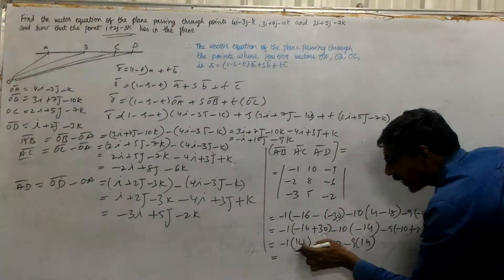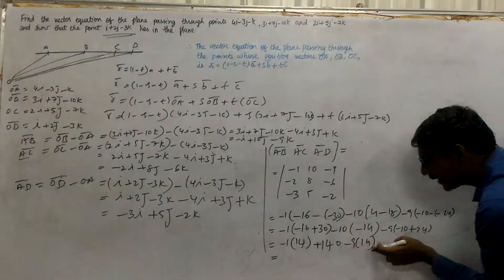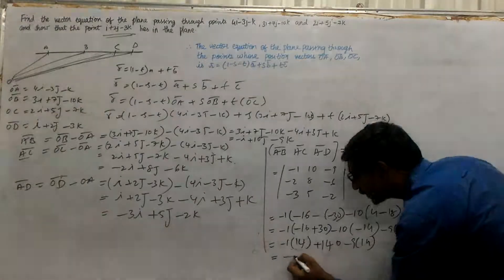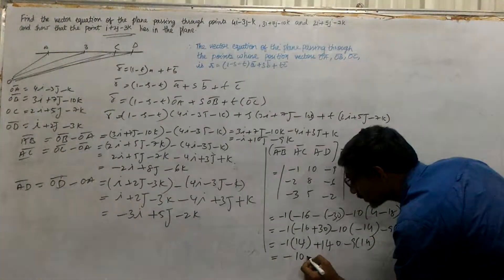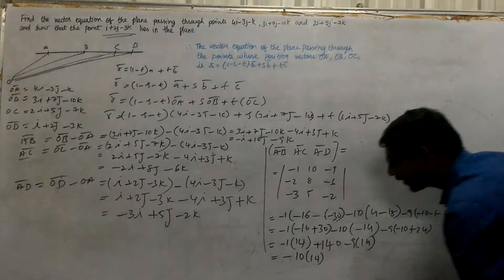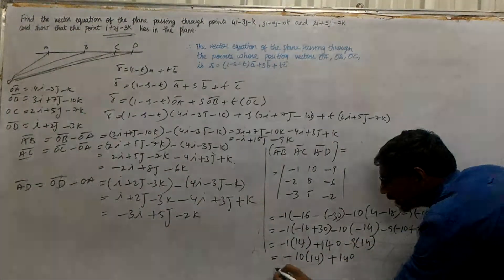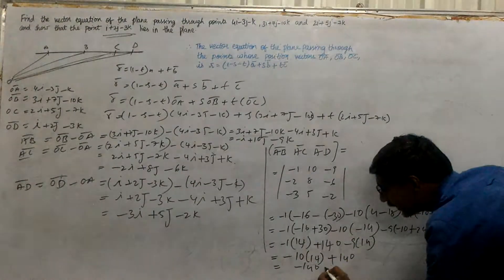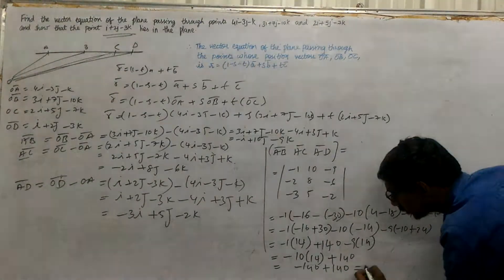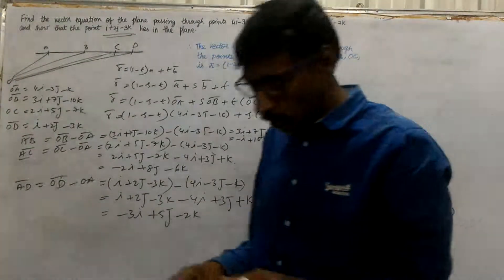And -9 times ((-2)×5 - 8×(-3)) equals -9 times (-10+24) equals -9 times 14. So -14 + 140 - 126 equals 0. Therefore, they are coplanar.